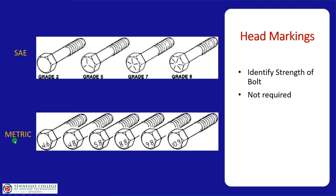For metric bolts, strength is indicated by numbers on the head — a much simpler process. You'll see values like 4.6, 5.8, and 9.8, and these numbers tell you the strength of the bolt.